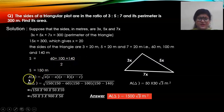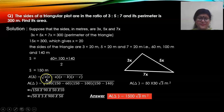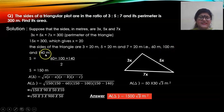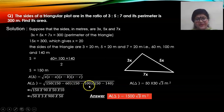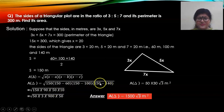Area of the triangle using Heron's formula. Write the formula, substitute S as 150: square root of 150 into (150 minus 60) into (150 minus 100) into (150 minus 140). The differences are: 150 minus 60 is 90, 150 minus 100 is 50, and 150 minus 140 is 10. Do not multiply these numbers, as calculating becomes cumbersome — split them instead.